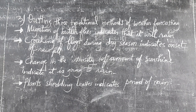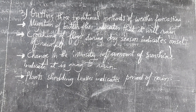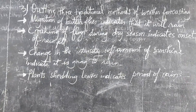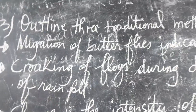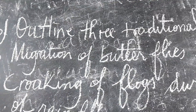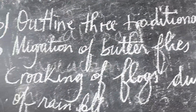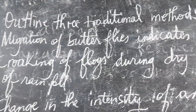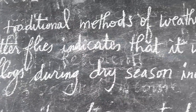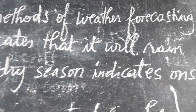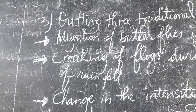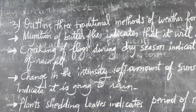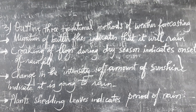Welcome again to this episode of Physical Geography where we are still on the predicted questions — questions we are predicting to be asked in the next coming national exam. The question of today is asking us to list three traditional methods of weather forecasting. So I would like to remind you what weather forecasting means.